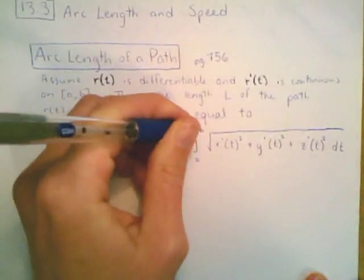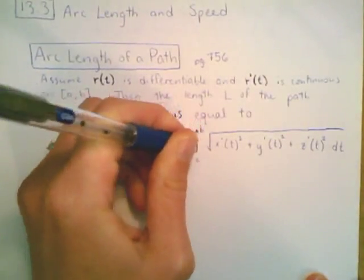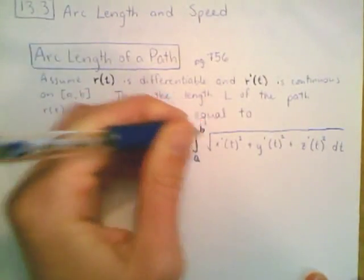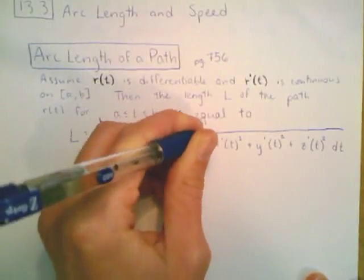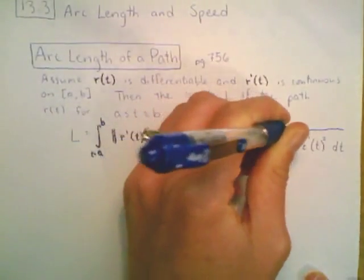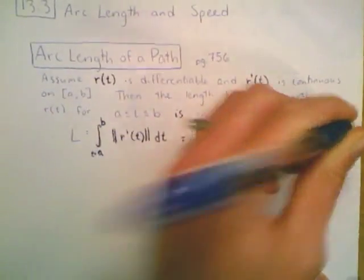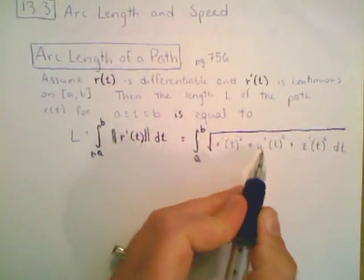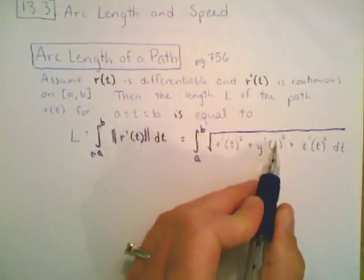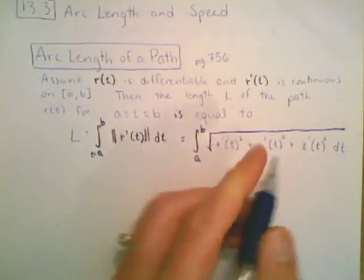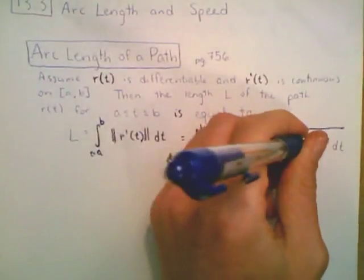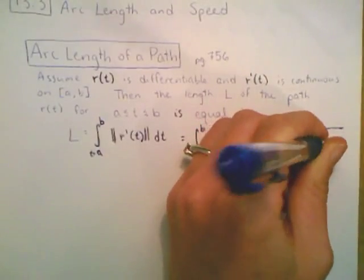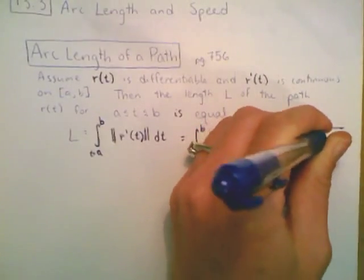This is equal to the integral from a to b of the square root of the derivative of the first component function squared, plus the derivative of the second component function squared, plus the derivative of the third component function squared.